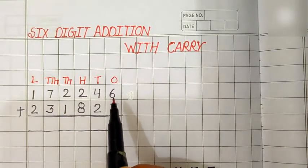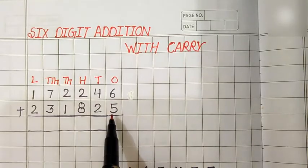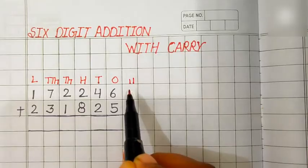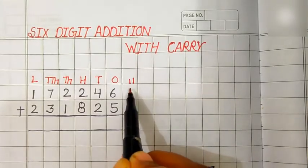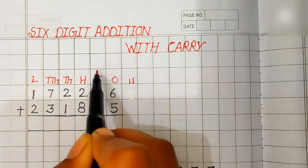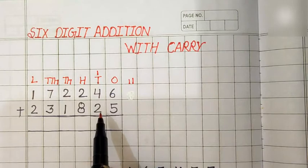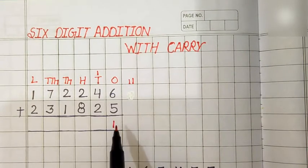Let's add ones first. 6 plus 5 is equal to 11. 11 is a two-digit number. We will carry 1 to the 10 place and 1 comes in the answer.